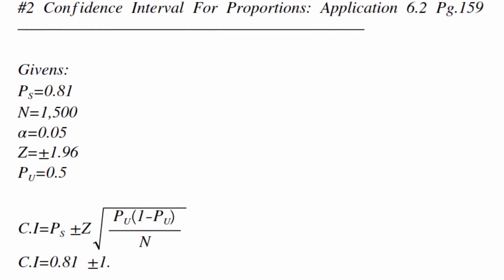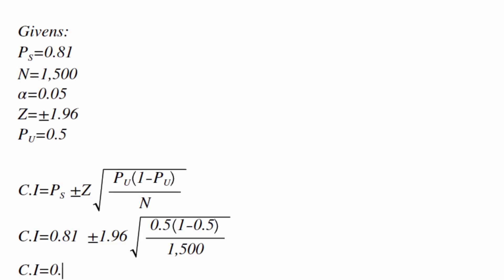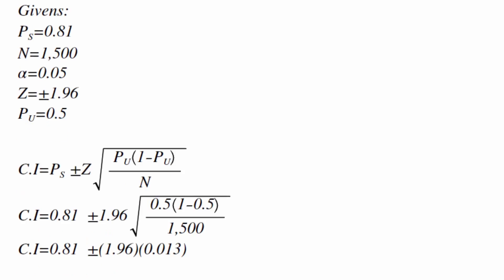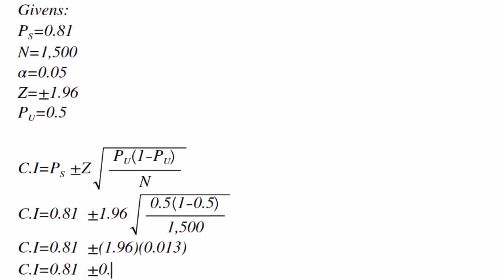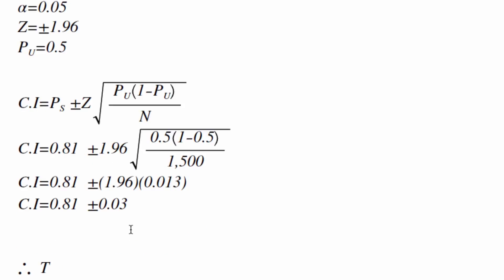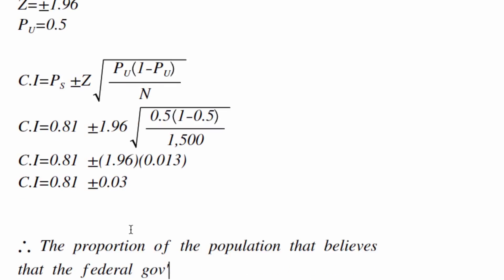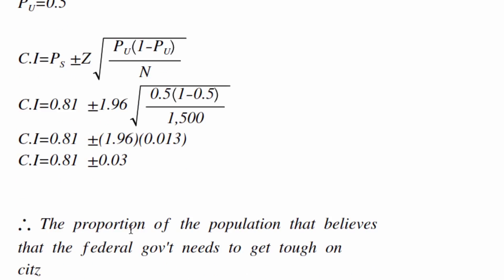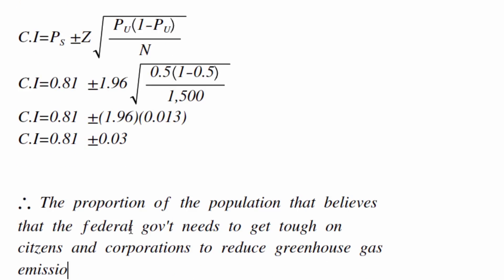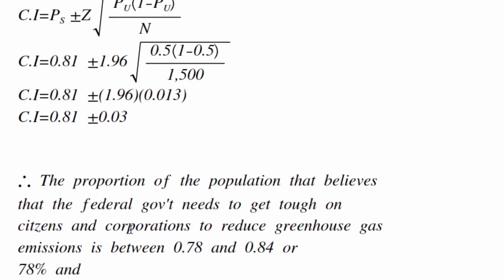Step 3: Calculate and solve for the confidence interval with our givens. Step 4: CI equals 0.81 plus or minus 0.03. Therefore, the proportion of the population that believes the federal government needs to get tough on citizens and corporations to reduce greenhouse gas emissions is between 0.78 and 0.84, or 78% and 84%. The interval has a 5% chance of not containing the population value.